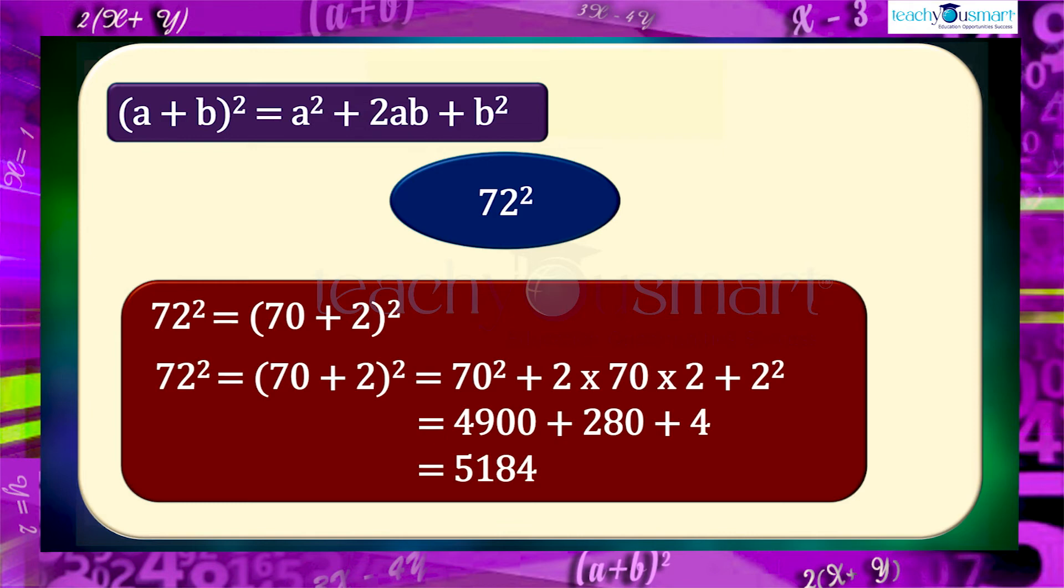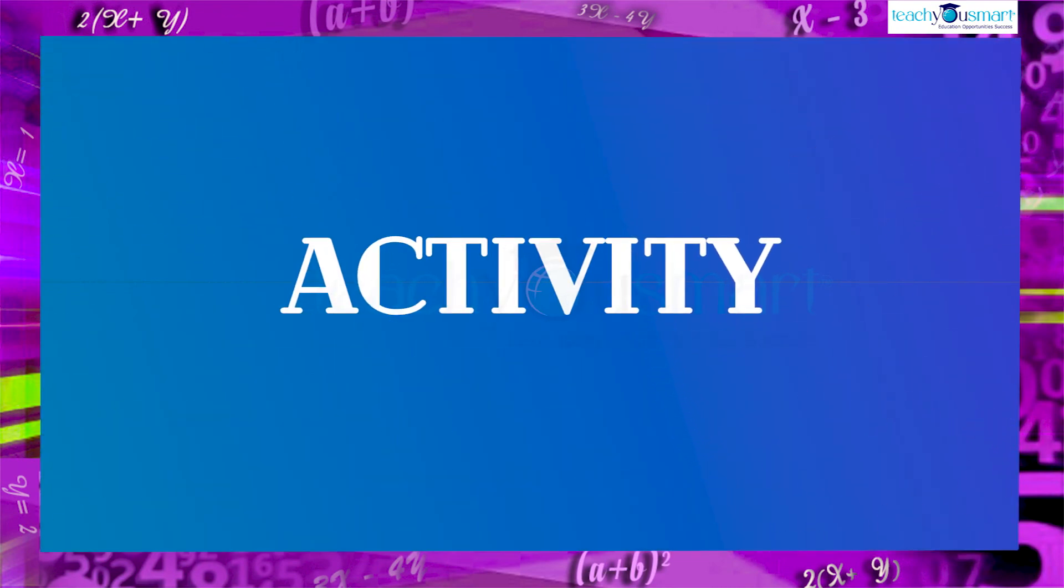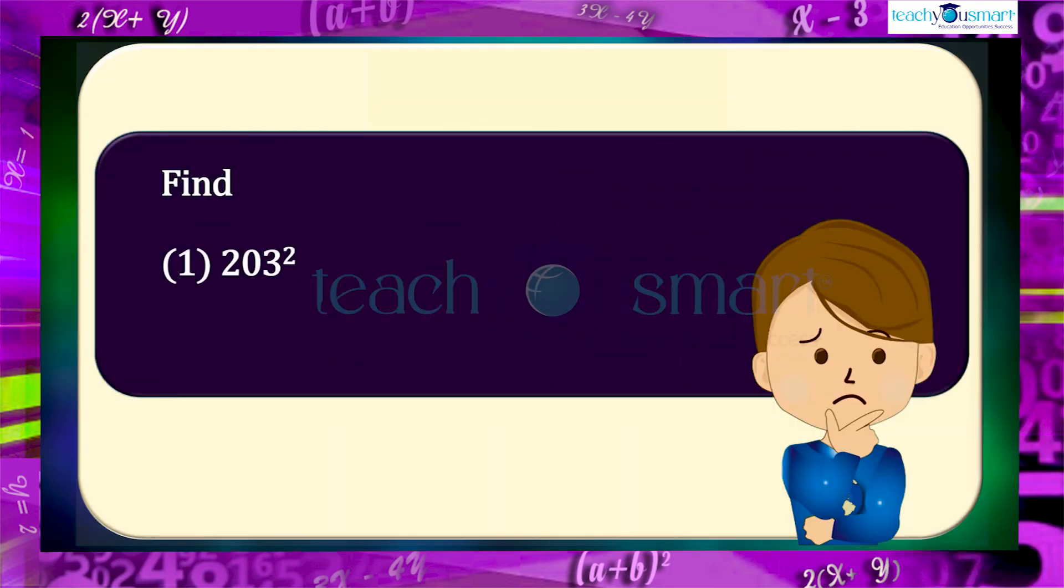So we can find the square of a number by using this identity. Before winding up, let's check how much you understood by doing an activity. Find 203² and (3p+4q)².